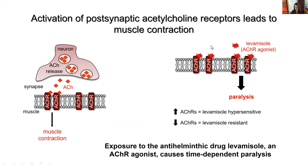Levamisole is a deworming agent used to treat parasitic nematode infections in livestock. This drug acts by binding to and constitutively activating levamisole-sensitive acetylcholine receptors that are only found in nematodes, resulting in paralysis. Altered sensitivity to levamisole suggests defects in signaling at the neuromuscular junction or defects in muscle function.